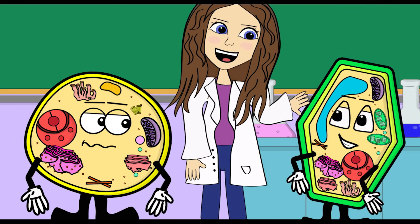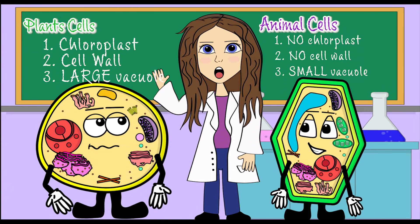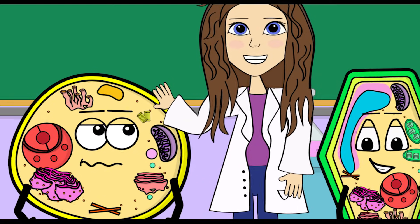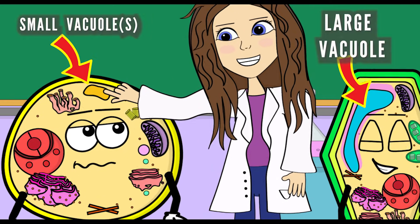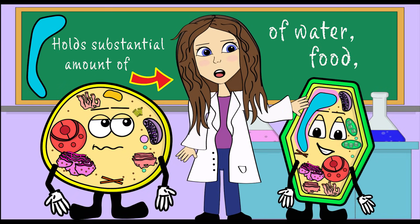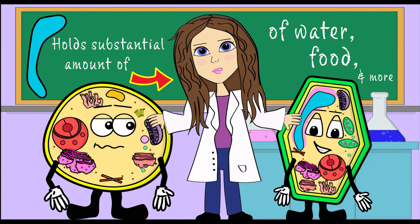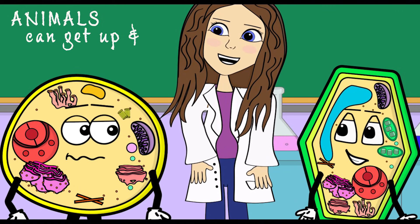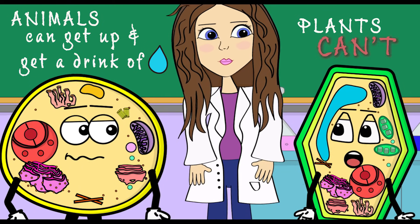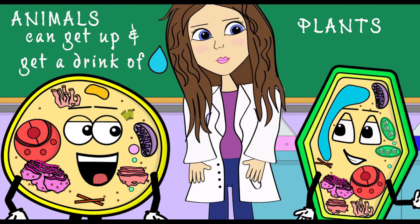It helps maintain your cell shape. The last thing we're going to talk about is the large vacuole. In plants, vacuoles are much larger than in animal cells — this allows them to hold a substantial amount of water, food, and other things. Since plant cells can't get up and get a drink of water, large vacuoles store it up like a camel!